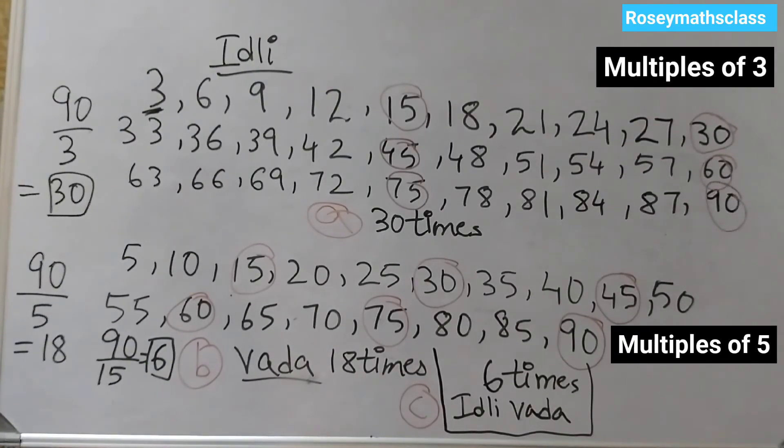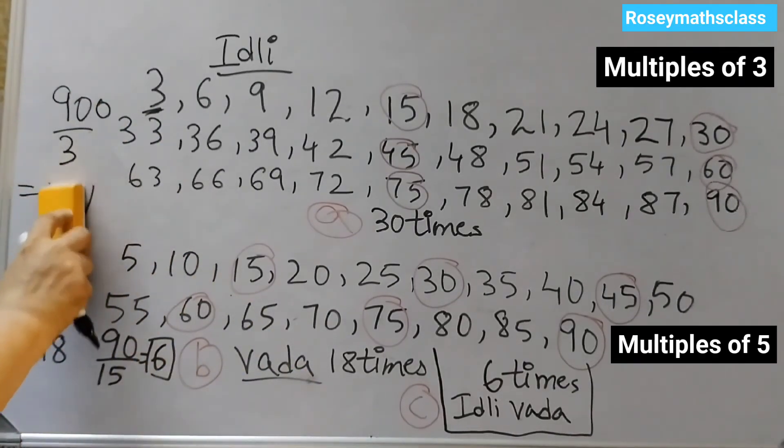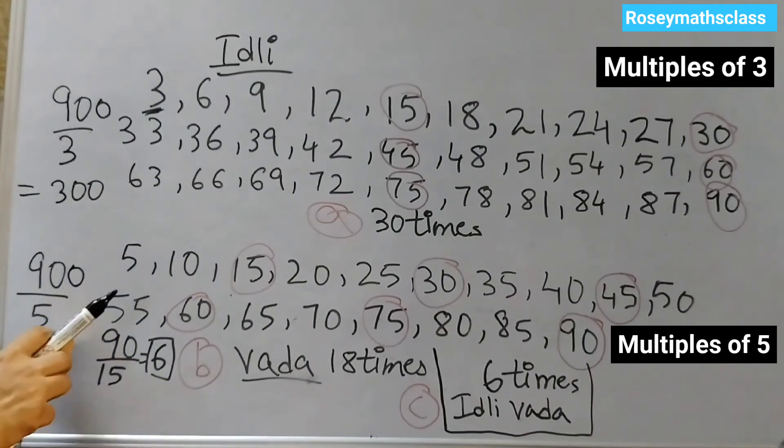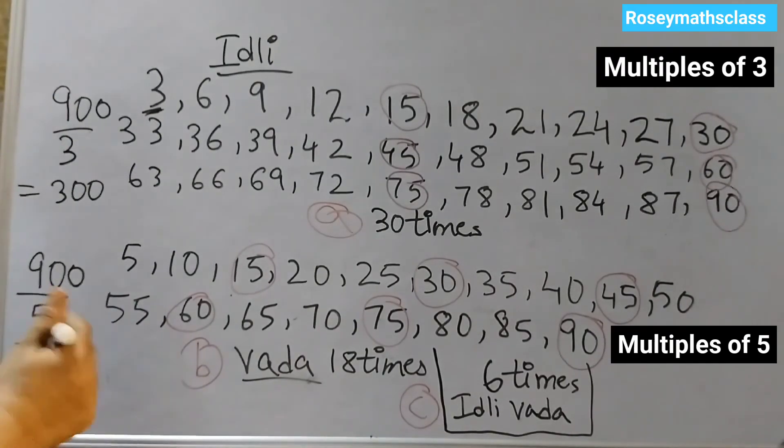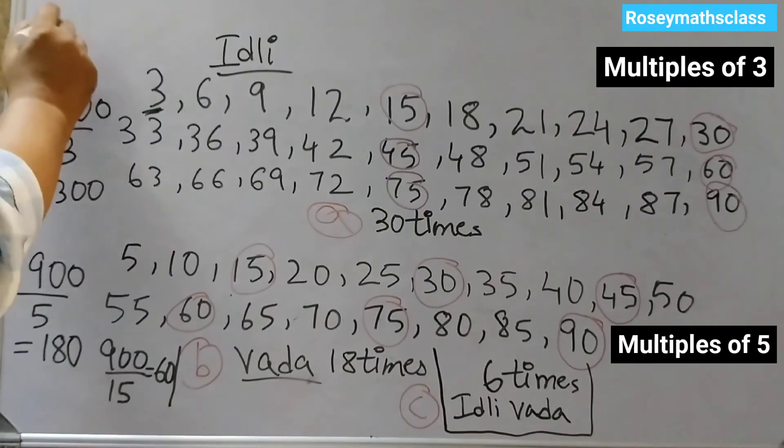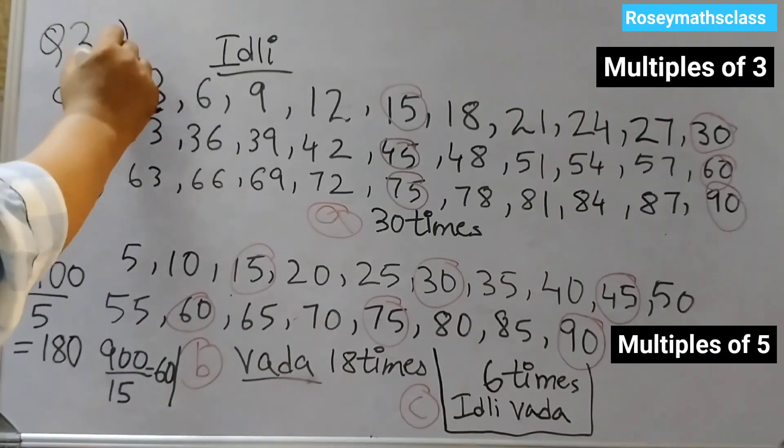Now we need to find out the multiples till 900. So we can make this 900, and the answer would change to 900 divided by 3 is 300. Here also we will make it 900, so the answer would be 180. And here if I make it 900, 900 divided by 15 will be equal to 60. These are the answers for question number 3.